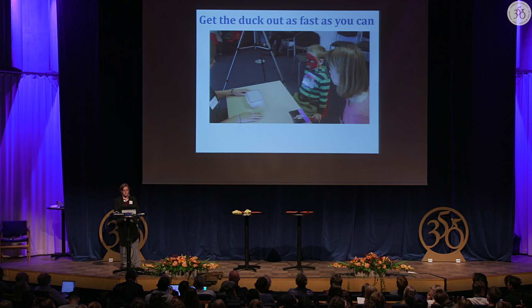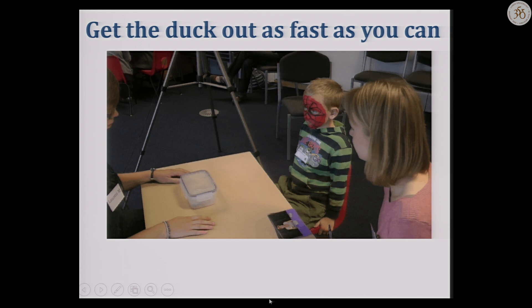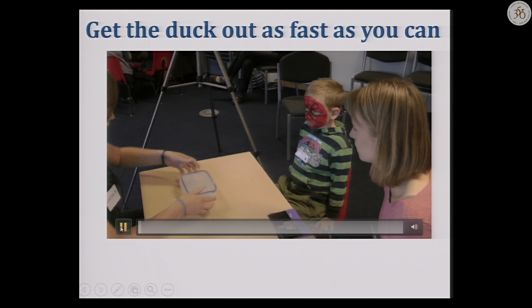I'm focusing particularly on imitation as an example of a social interaction that we can at least recognize when it happens and try to pin down what kinds of things might be going on. I'll start with an example of a task. This lad, about seven years old, is taking part in a series of experiments in a science project. He's been told: you're going to see Lauren take the duck out of the box, and your job is to get the duck out of the box as fast as you can.